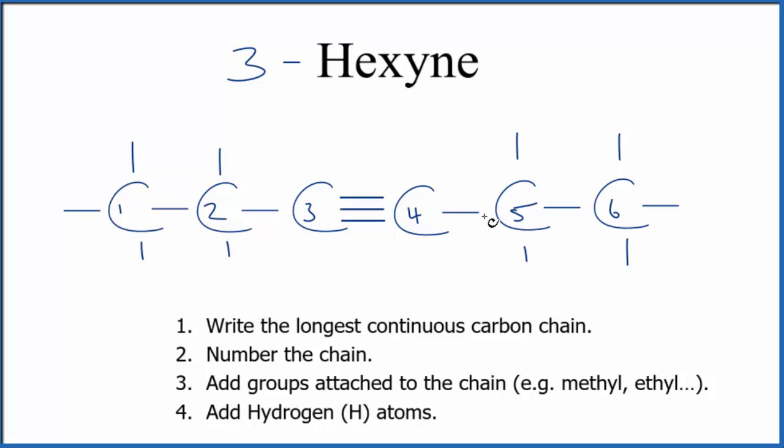We really can't move it over any further. If we move it here, then we would want to renumber starting from one here, and that would just give us 2-hexyne. So there really are only three isomers here: one, two, and three hexyne.